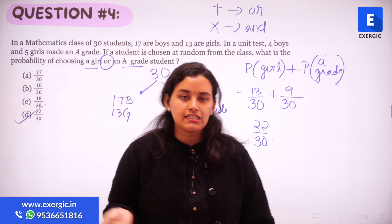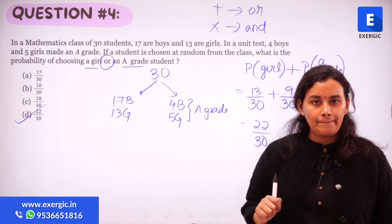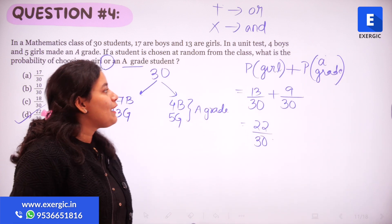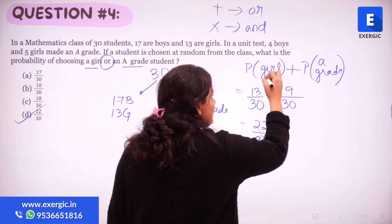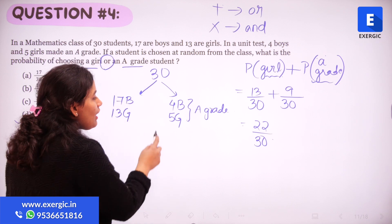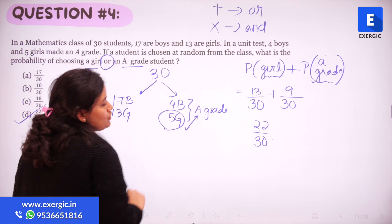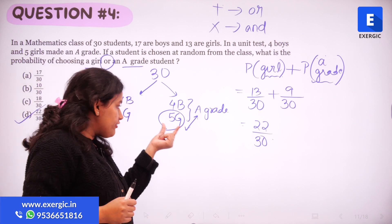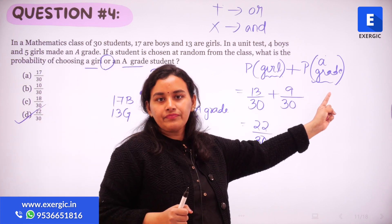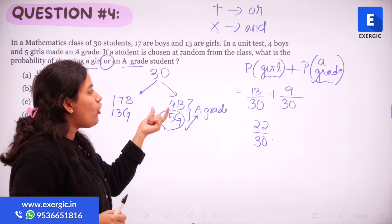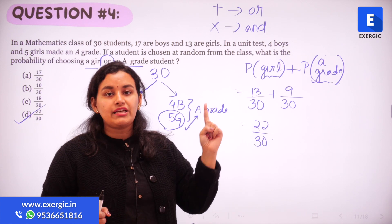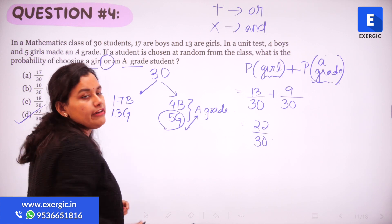Is this the correct answer — 22 by 30? Think about it. No. Why not? Because there is an intersection between the number of girls and A grade students. There are girls who are A grade students. These 5 girls who are A grade students have been counted in the probability of selecting an A grade student, and these 5 girls have also been counted in the probability of selecting girls.